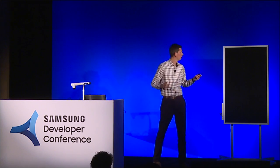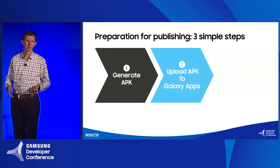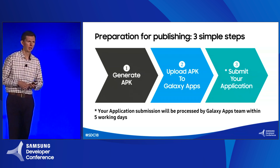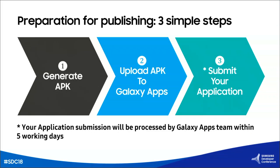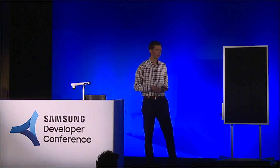Finally, we look at how to prepare and publish your assets to the Galaxy App Store. The first stage we've already completed — we've generated the APK file, which is ready for upload to the Galaxy App Seller site. You just take your APK file, upload it to Galaxy Apps, submit your application, and wait for acceptance and approval. Usually the Galaxy App Seller site team processes your application submission within five working days. As best practices, we had a great collaboration experience with our Disney partners, and all the Disney families are now available in Galaxy Apps for users to enjoy.